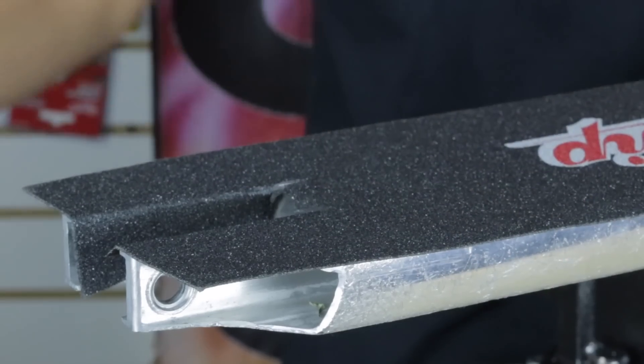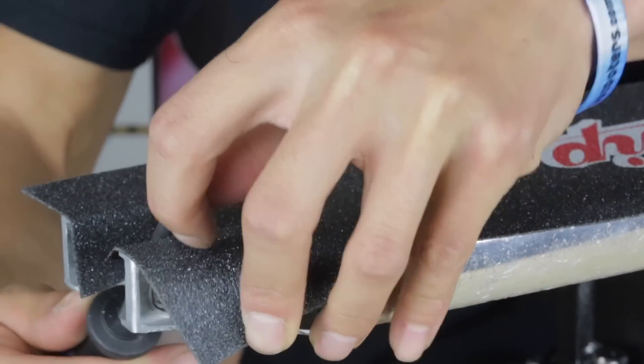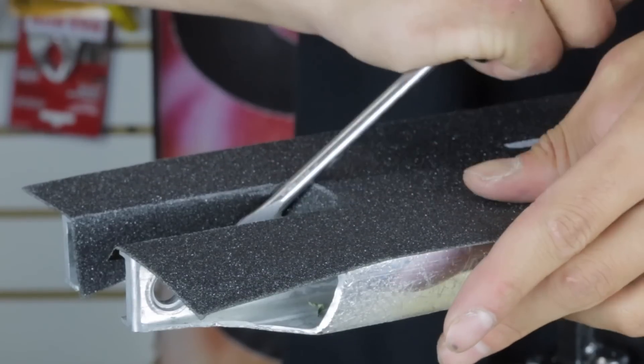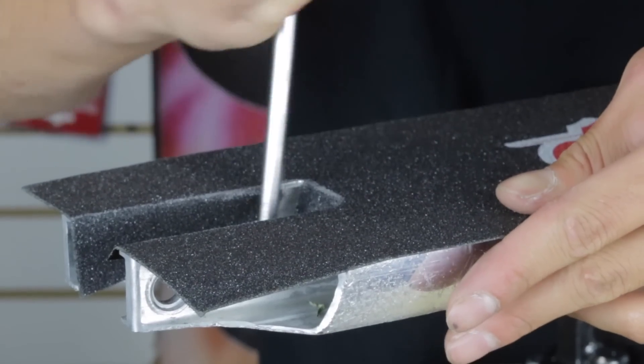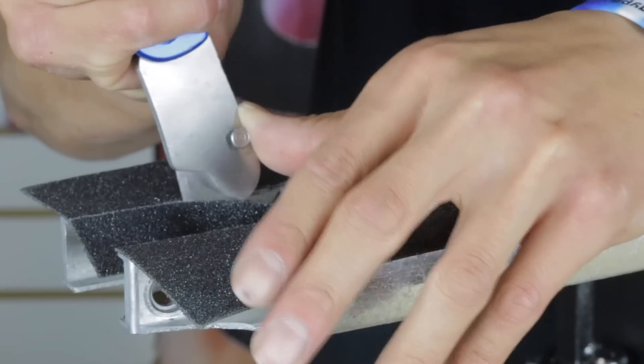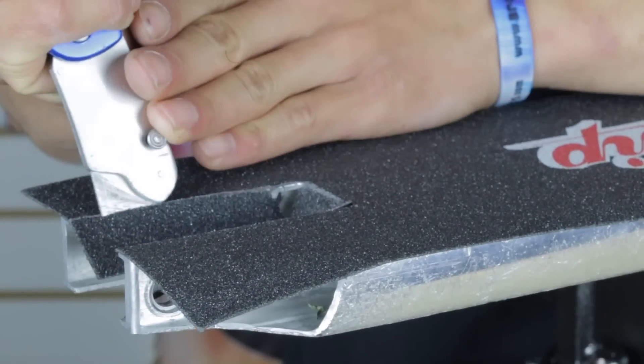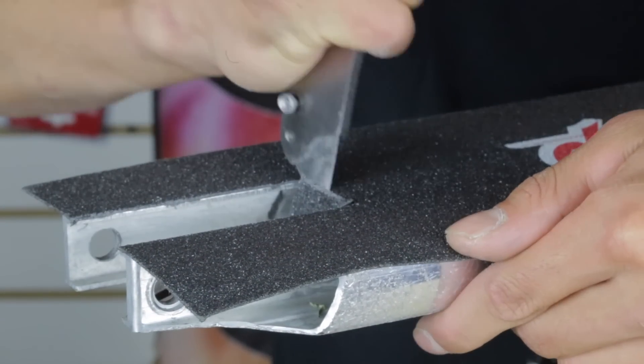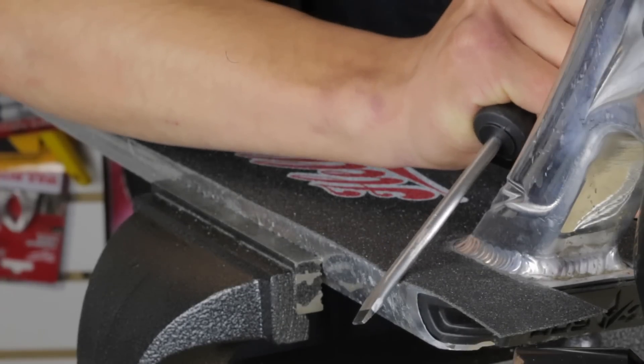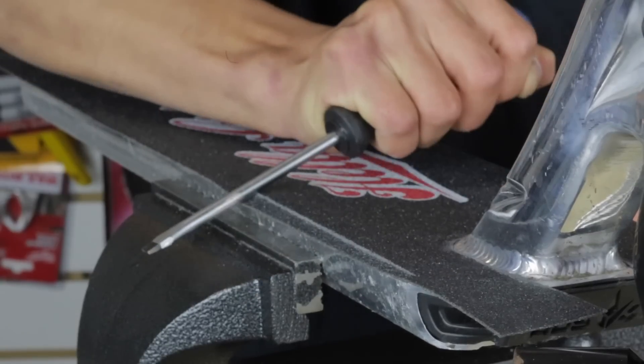So if you don't want to go from there, what you can do is always grab a flathead. Get it nice and soft. Always smooth out the edges so that you can cut through the grip tape a lot easier. Just do this all around the deck.